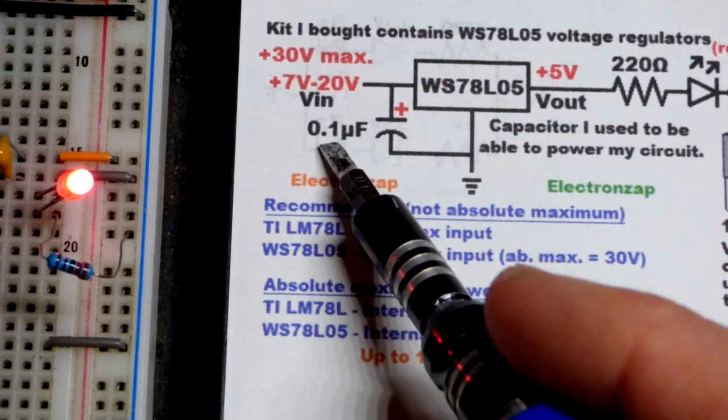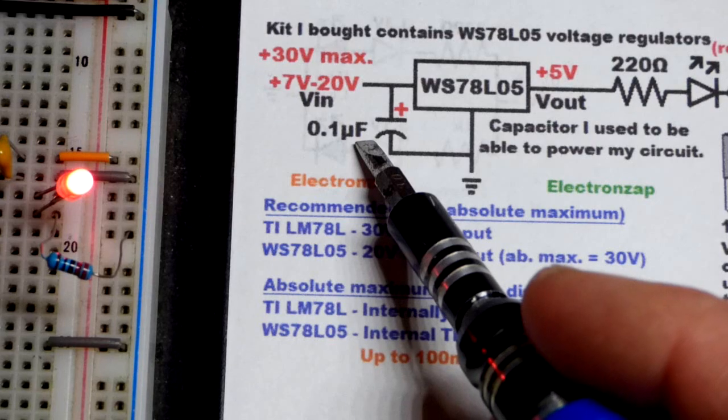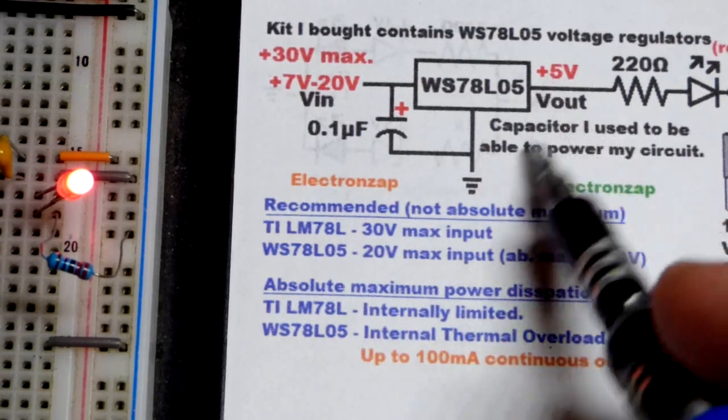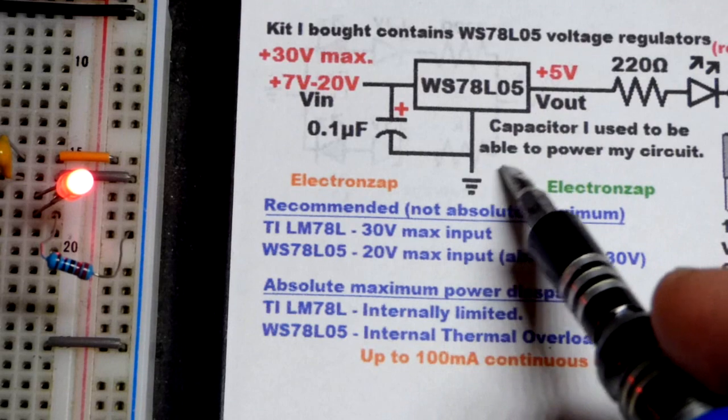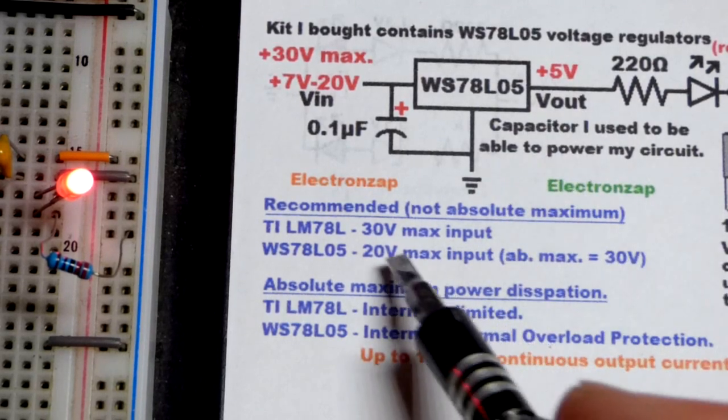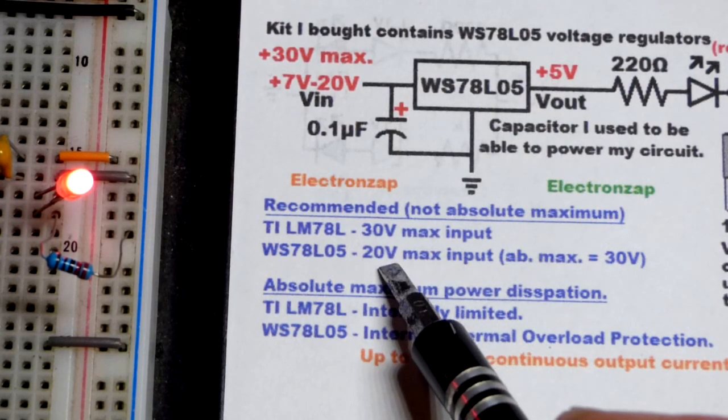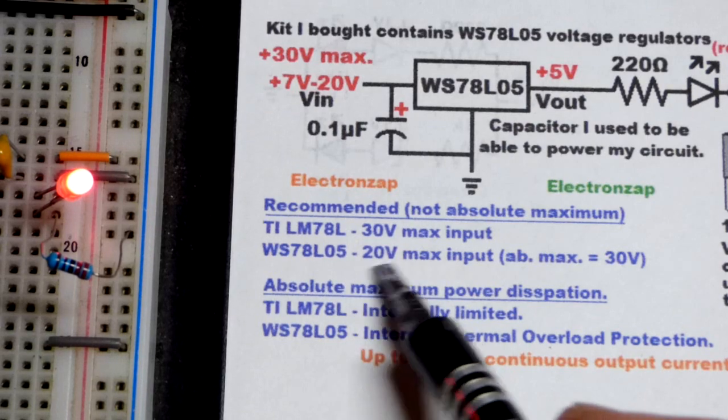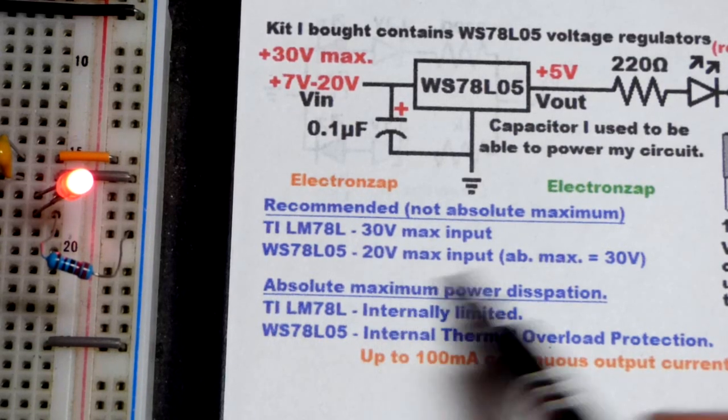A lot of datasheets show 0.33 microfarad here and a 0.1 microfarad on that side. It's best to have one on that side as well. But I did not add one to this video. But in any case, as I said before, 7 to 20 volts is the recommended range.